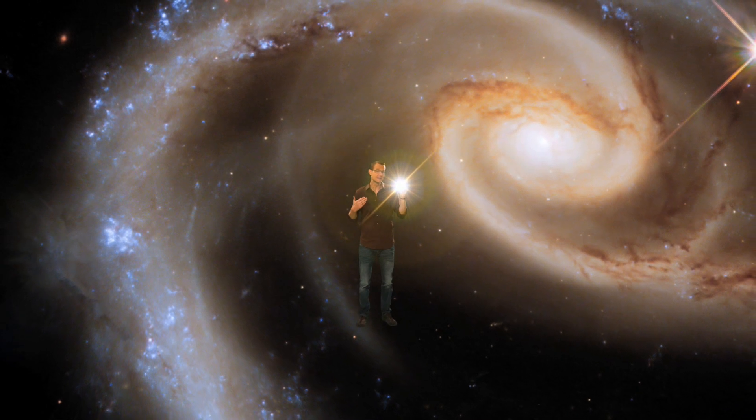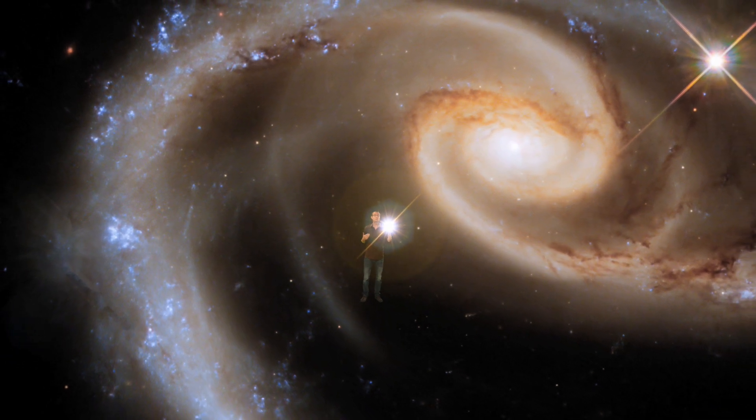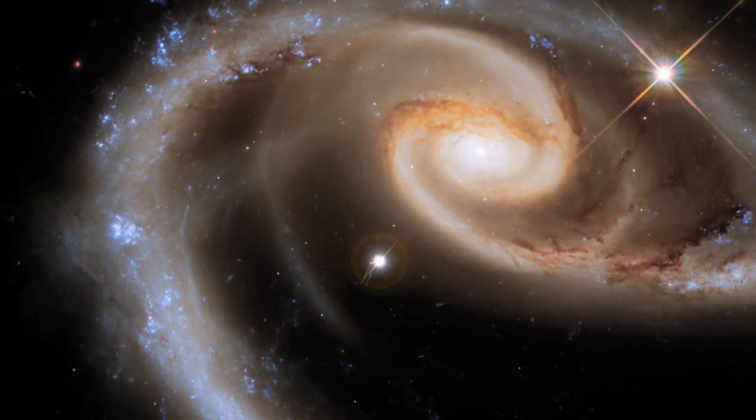This is the galaxy Arp 273, which is about 500,000 times farther away than Betelgeuse. But at the same time, it's about a billion times bigger, which means that its apparent size on the sky is still about 2,000 times larger than that of Betelgeuse.